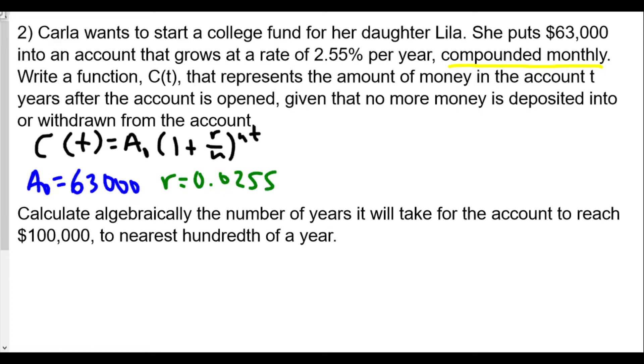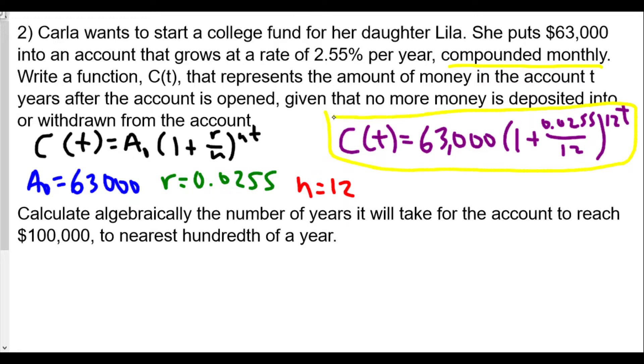The number of times compounded yearly, if we compound monthly, is going to be 12 because there are 12 months in a year. So our formula will be C(t) equals 63,000 times one plus 0.0255 over 12 raised to the 12t power. This will be the answer for the first part.